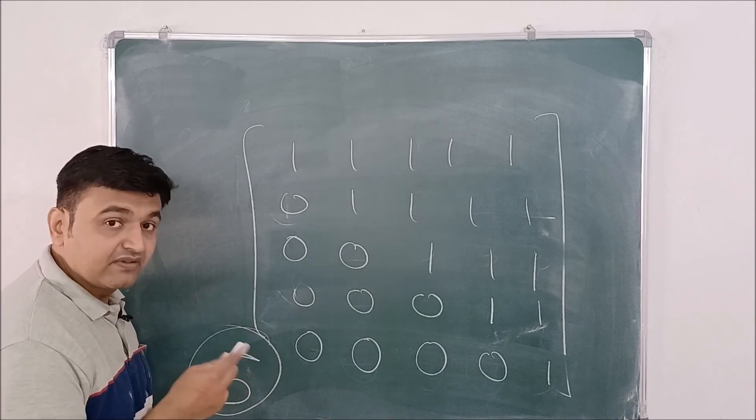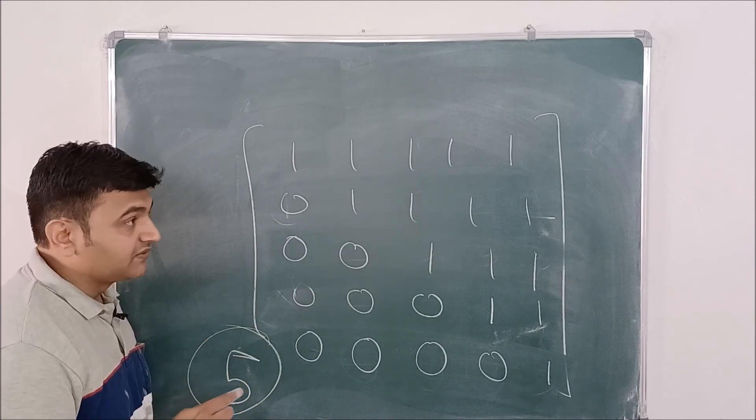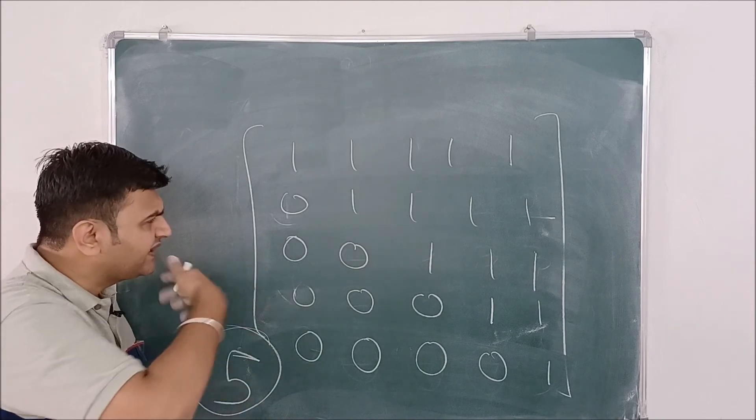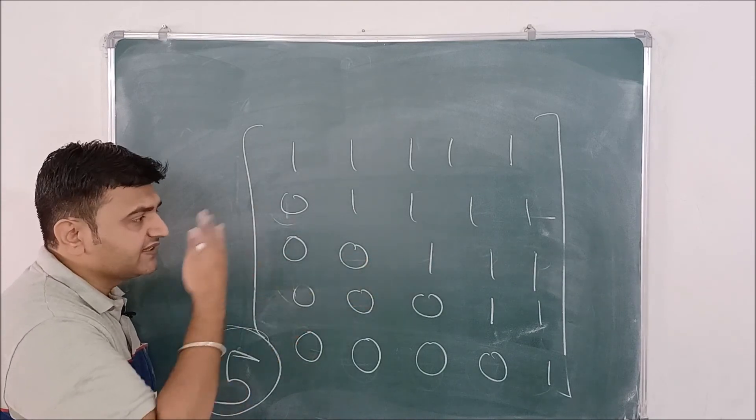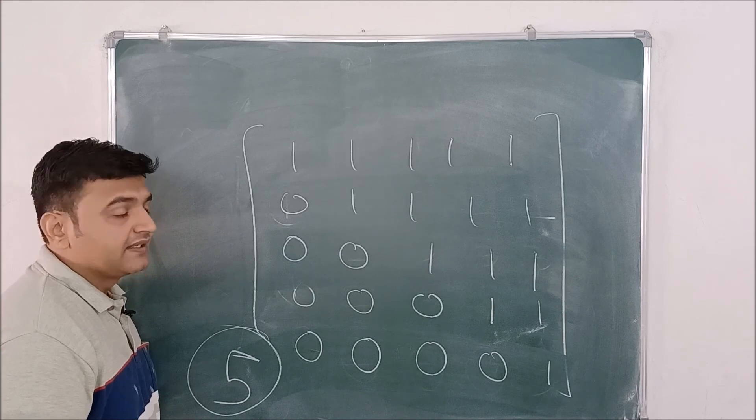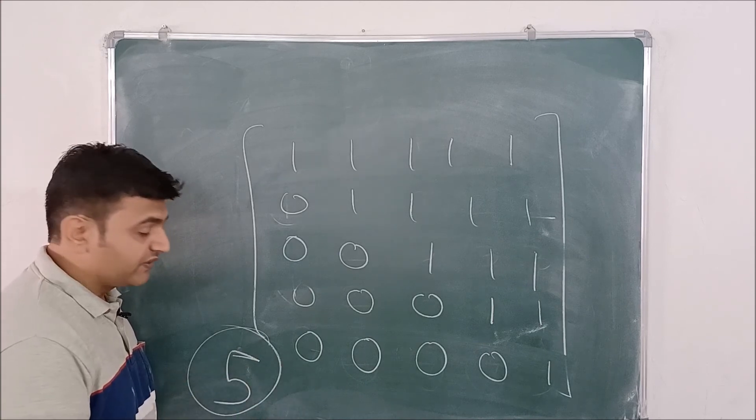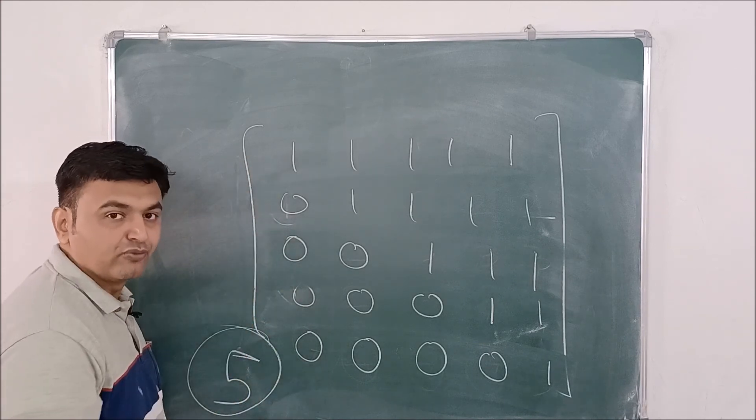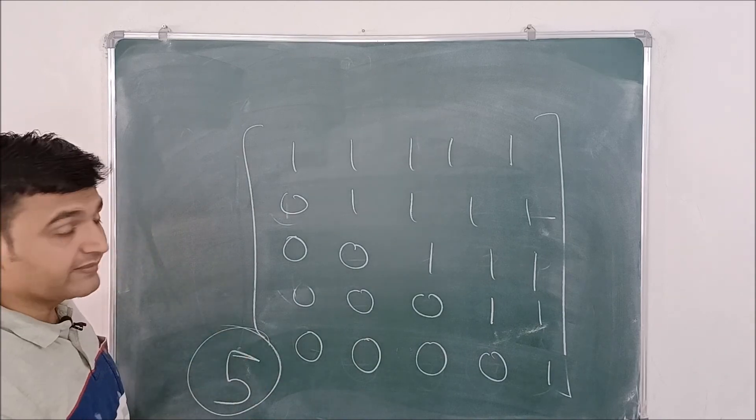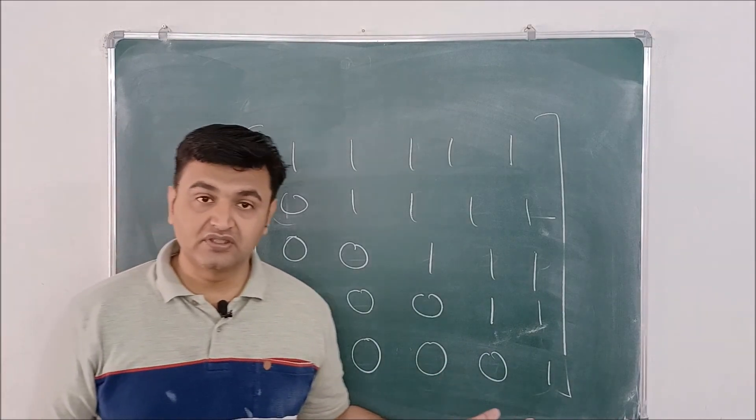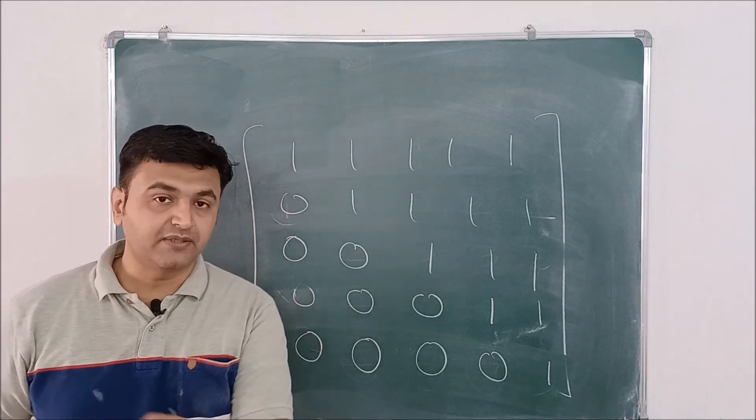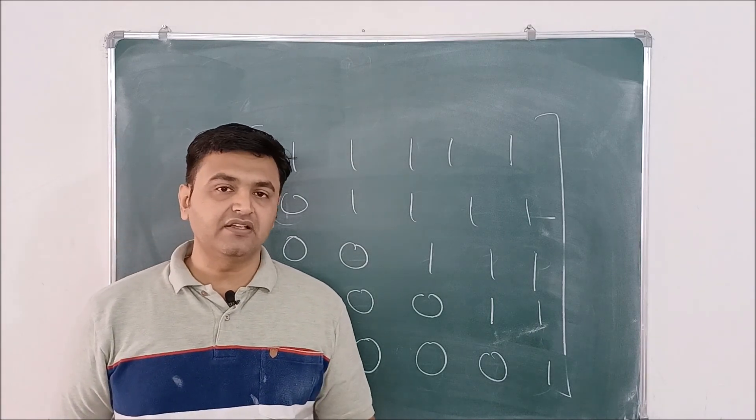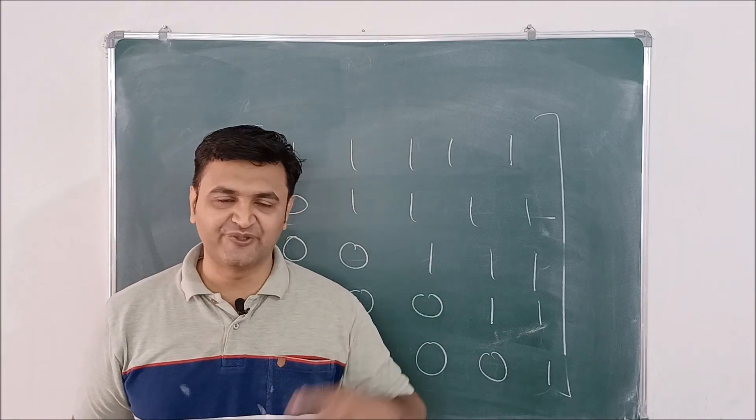So therefore, this is the smart work one has to do while giving such exams. Once seeing a question, don't directly start with the operations. Just see is there any pattern? Then decide which operations you should do, whether you should go from bottom to top or top to bottom. So rank for this matrix is five. So I hope you understood this. If you have any other problem in which you are finding difficulty in finding the rank, you can ask me in the comment section. Thank you.